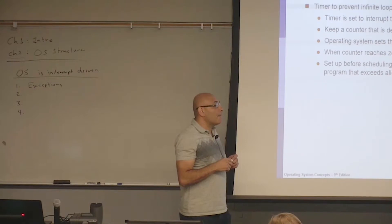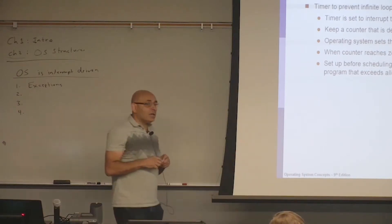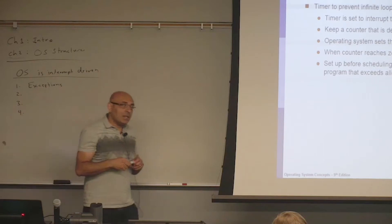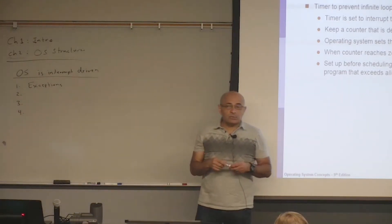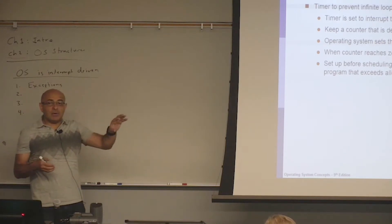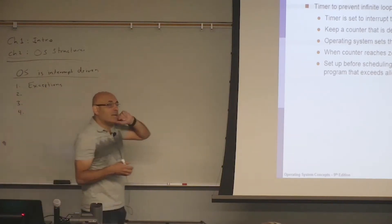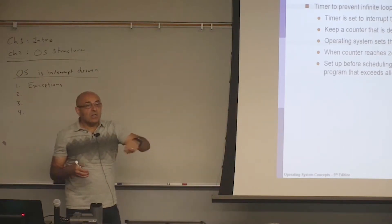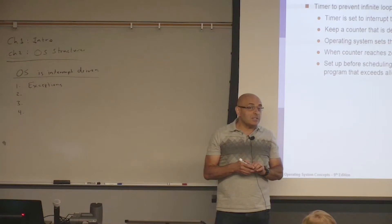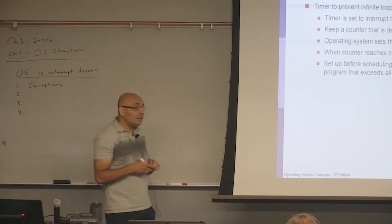When do exceptions occur? For example, when a user program is trying to use a privileged instruction that's reserved for the OS. Generally speaking, exceptions occur when a process is trying to do something wrong — something invalid — like accessing a memory location that does not belong to it. Other examples are divide by zero, stack overflow, floating point overflow, attempting to execute a privileged instruction that the process is not allowed to execute, or trying to execute an invalid instruction.